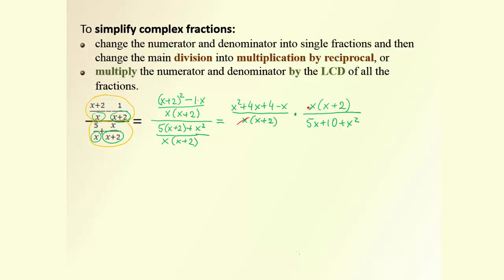We can see two common factors to reduce, and also a bracket we can reduce. The overall expression simplifies: the numerator becomes x² + 3x + 4 and the denominator is x² + 5x + 10. Now we check if factoring is possible — product 4, sum 3 is impossible; product 10, sum 5 is also impossible. So this is the final answer.